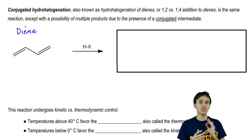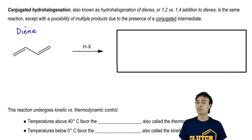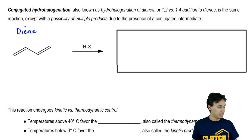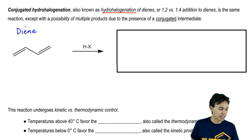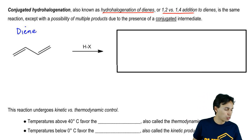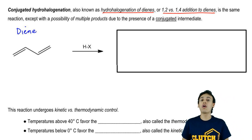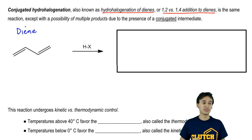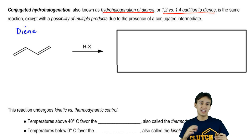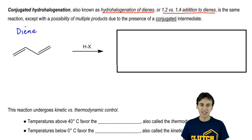Your textbook might not call this conjugated hydrohalogenation — there are a few different names. It could also be called hydrohalogenation of dienes, or 1,2 versus 1,4 addition to dienes. If you ever see hydrohalogenation and allylic together, that's another way to say it. These are all the same exact concept.